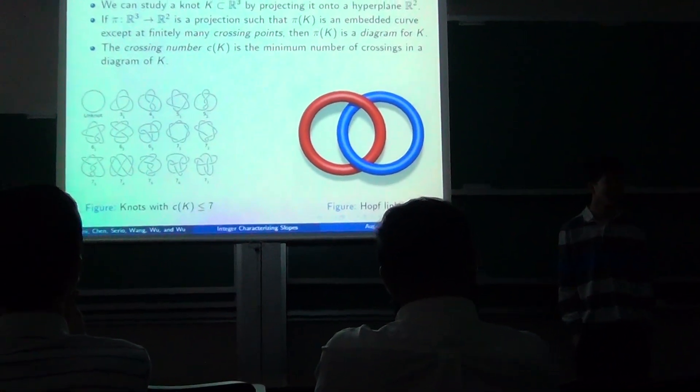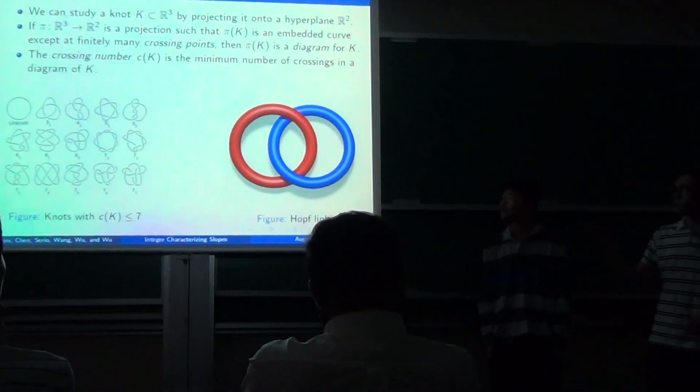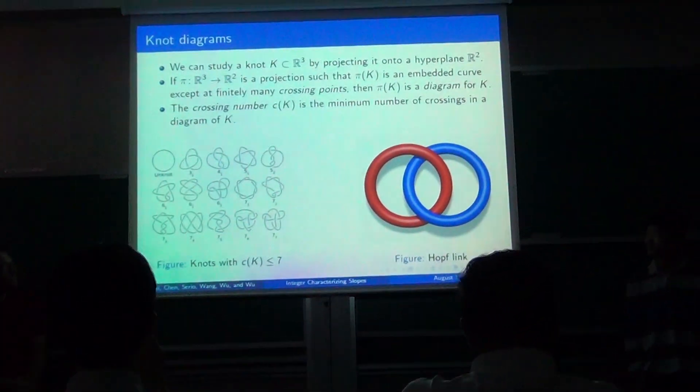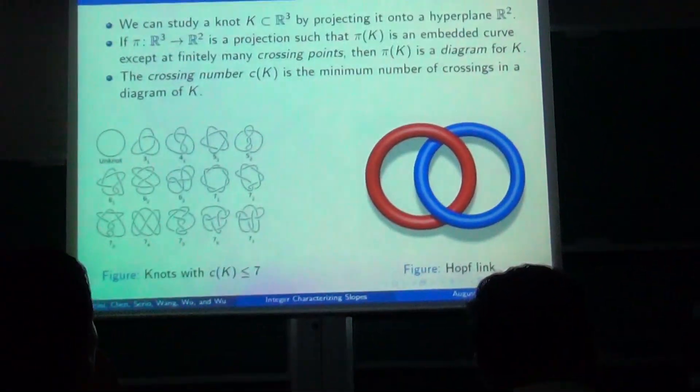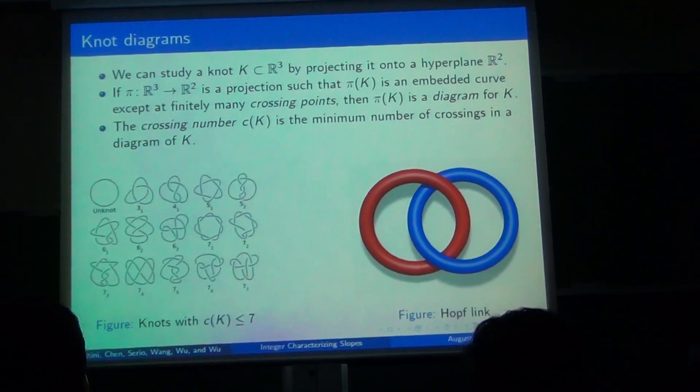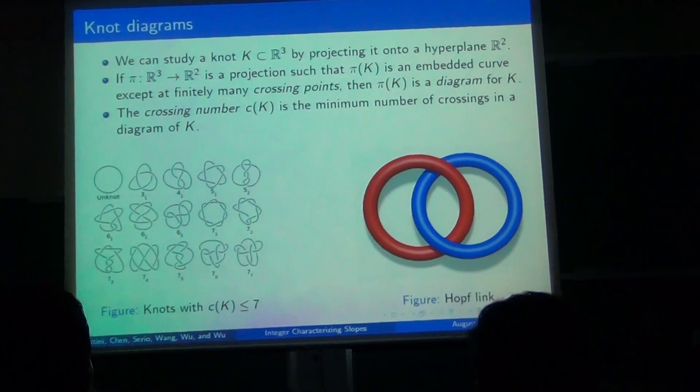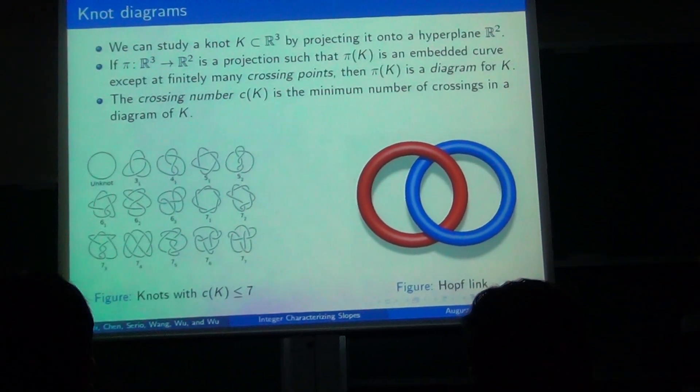When we do this, we're going to get some crossings, as you can see in the diagrams on the bottom left. The crossing number is defined to be the minimum number of crossings in a diagram. Some examples of knots are the unknot, the trefoil 3₁, and the figure eight 4₁. And we have the hoplink on the right.